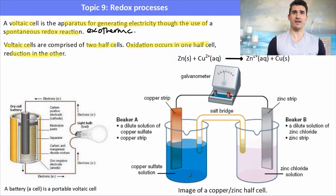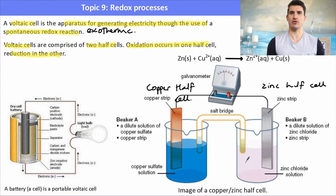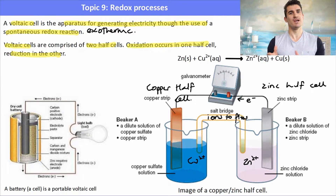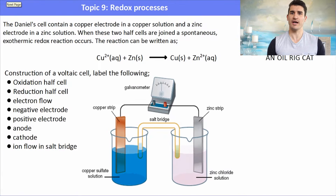A battery is essentially a voltaic cell, just a much more advanced one. One of the first galvanic cells set up was the Daniel cell, shown here, which contains beakers, electrodes, and solutions. It has a zinc half cell — a zinc solid electrode submerged in a Zn²⁺ solution — and a copper half cell with a copper electrode submerged in a Cu²⁺ solution. A salt bridge connects the two half cells, allowing ions to flow between them, while electrons can only travel through the external wires. A voltmeter measures the voltage of the cell.